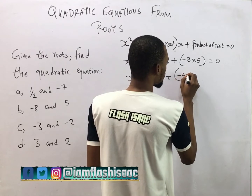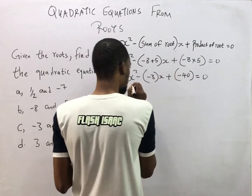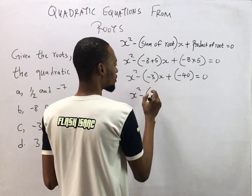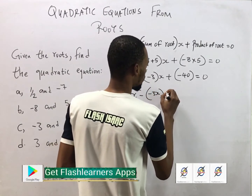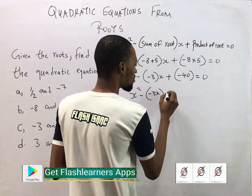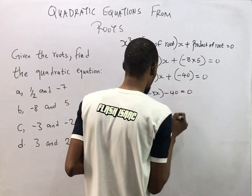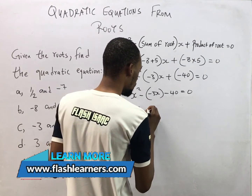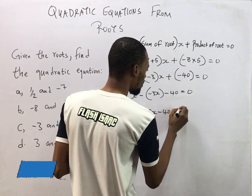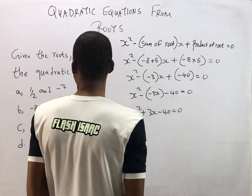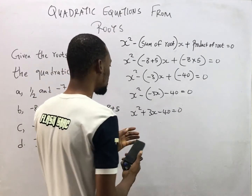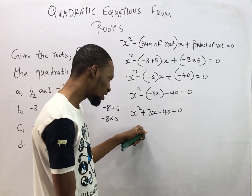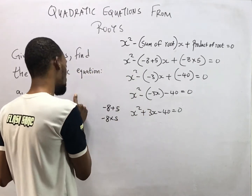-8 + 5 = -3, so we have -3s; and -8 × 5 = -40. So: s² - (-3)s + (-40) = 0, which becomes s² + 3s - 40 = 0. The roots of the equation are -8 and 5, and the equation is s² + 3s - 14 = 0. If you solve this equation you will get these roots, -8 and 5.